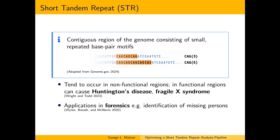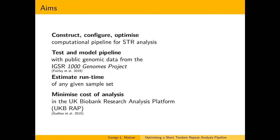Due to the highly variable nature of STRs between individuals, an individual likely has a unique signature which can be used for identification, suggesting forensic applications. The overall aims of this project were to construct, configure and optimise a computational pipeline for STR analysis, then test and model the pipeline to optimise computation, and build a model for estimating runtime of a given set of samples. Ultimately, we aim to minimise the cost of analysis in the UK Biobank Research Analysis Platform, a commercial cloud platform containing our target data for the final analysis.